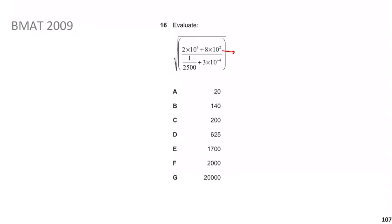Dividing everything in the fraction by 4: the first term 2 × 10³ divided by 4 gives 0.5 × 10³. The next term 8 × 10² divided by 4 gives 2 × 10². And 1/2500 divided by 4 is 10⁻⁴. So the denominator terms become 10⁻⁴ + 0.75 × 10⁻⁴.